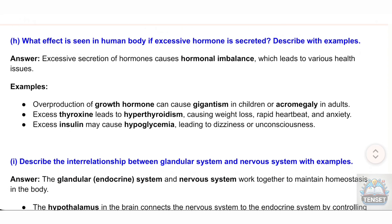H) What effect is seen in the human body if excessive hormone is secreted? Answer: Excessive secretion of hormones causes hormonal imbalance, leading to various health issues. Examples: overproduction of growth hormone can cause gigantism in children or acromegaly in adults; excess thyroxine leads to hyperthyroidism causing weight loss, rapid heartbeat, and anxiety; excess insulin may cause hypoglycemia, leading to dizziness or unconsciousness.